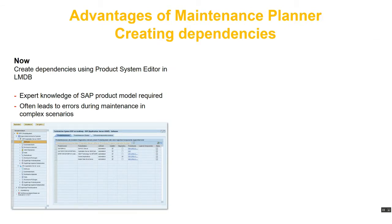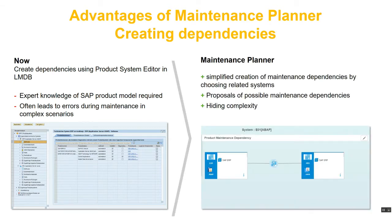Now let's talk about the advantages of Maintenance Planner, starting with creating dependencies. In the current scenario you use the product system editor in the LMDB to create dependencies, grouping technical systems and assigning them to a product system to get valid landscape data. This is a complex process where things can go wrong. With Maintenance Planner the process has been simplified — you can create dependencies in a modeling environment that is easy and straightforward. As you can see from the screenshot, a dependency between an ABAP system and a Java system can be created without involving the complexities of technical systems and product systems, and the pictorial representation makes it easily understood by anyone in the organization.